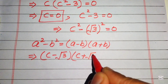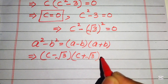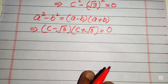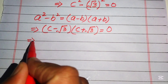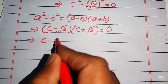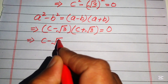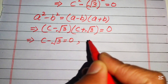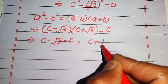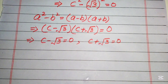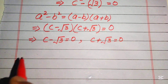We split into two cases again. The first case is c minus square root of three equals zero, and the second case is c plus square root of three equals zero.